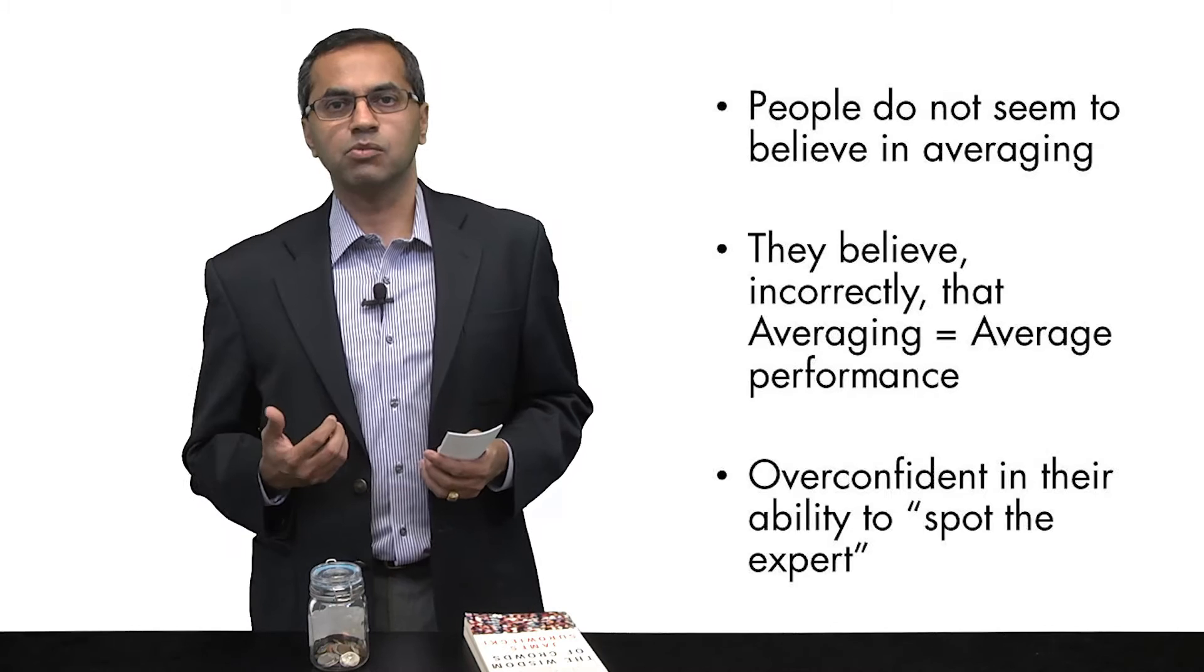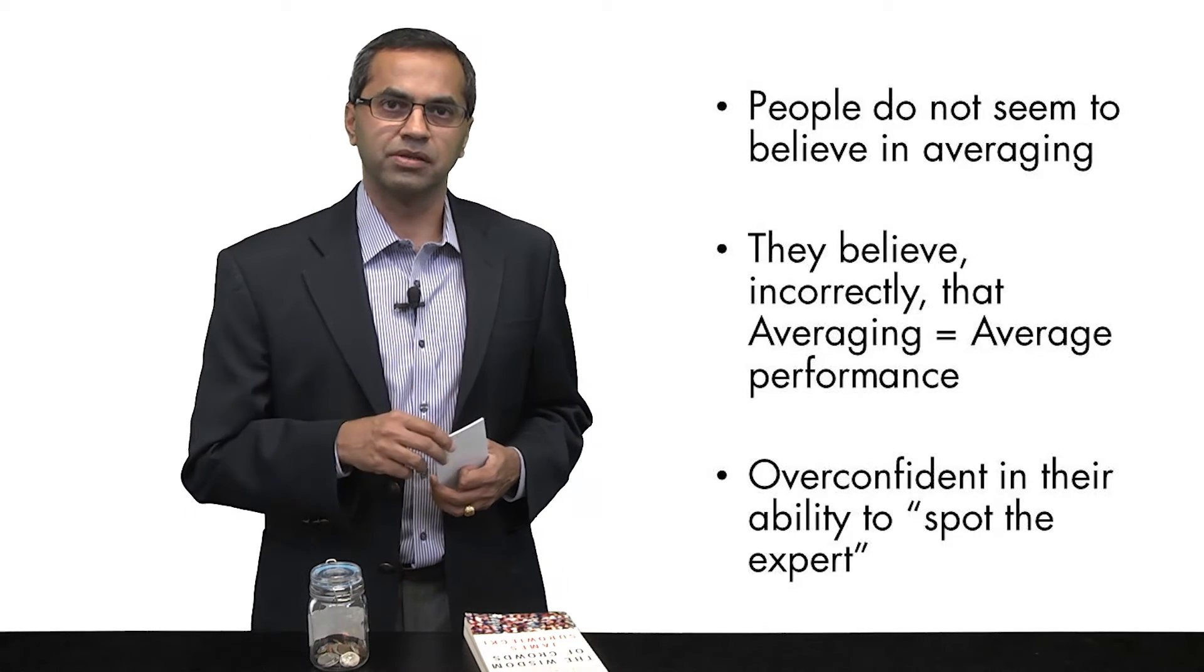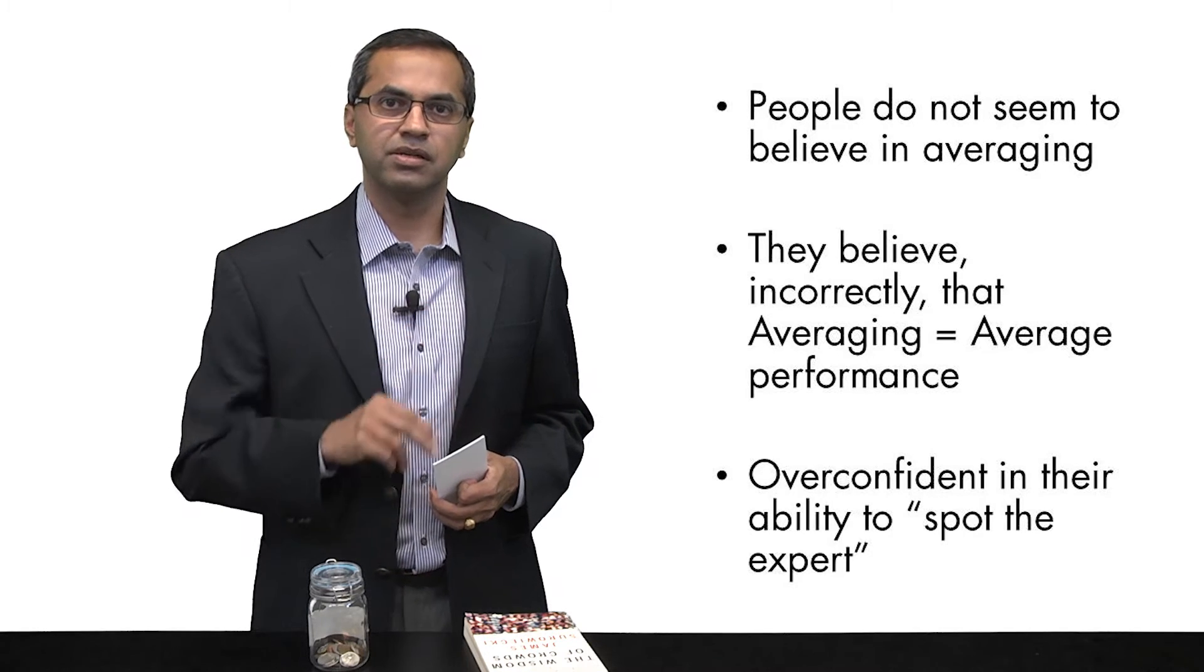Now, much of the work in this area has been done by two professors at Duke University, Jack Saul and Rick Larrick. And what Jack and Rick essentially argue is that while we can prove mathematically that averaging is a dominant strategy, most of us don't believe it is. Most of us believe that averaging results in an average judgment. It's not true. Averaging actually results in a superior judgment.